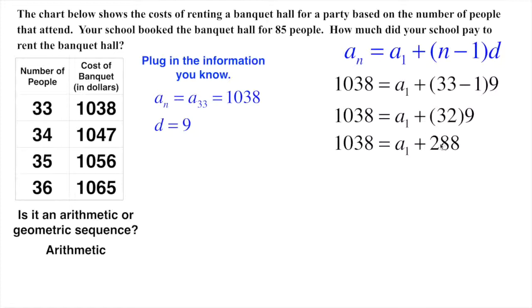In order to get a of 1 all by itself, we subtract 288 from both sides. That gives me 750. So just to rent the banquet hall and have one person attend is basically what they're saying. It costs $750. That's normally your first person costs a lot because you're actually renting the banquet hall, and then after that, it's just an incremental charge.